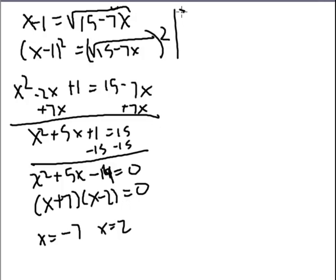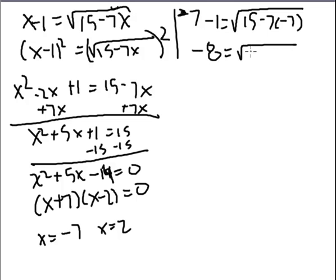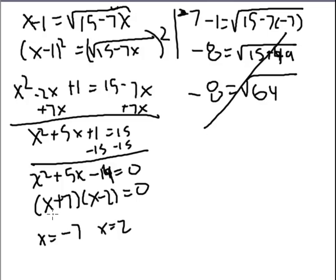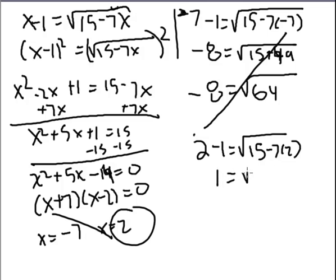Does negative 7 minus 1 equal the square root of 15 minus 7 times minus 7? Negative 7 minus 1 is negative 8. 15 plus 49. So, does negative 8 equal the square root of 64? And the answer is no. So negative 7 doesn't work. Let's now check 2. Can we say 2 minus 1 equals the square root of 15 minus 7 times 2? 1 does indeed equal 15 minus 14, and this works.